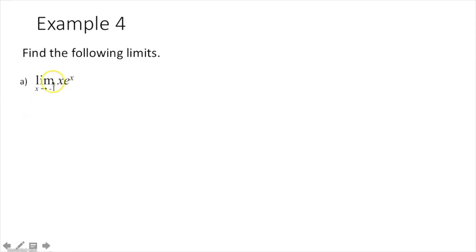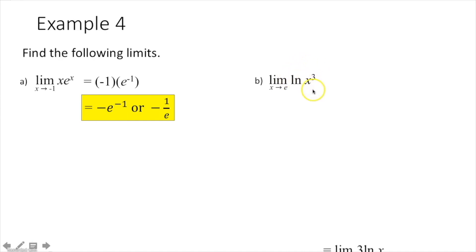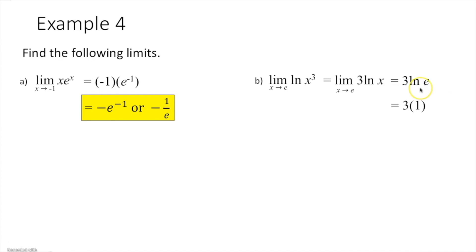Example 4: evaluate limits by substitution. Take negative 1 and plug it in for each of the x's, then simplify — you end up getting negative e to the negative first, or negative 1 over e. Part B: the limit as x approaches e of ln of x cubed. Using the power property of logs, move the 3 out front. Then plug in e, and the ln of e is 1, so 1 times 3 gives you 3.